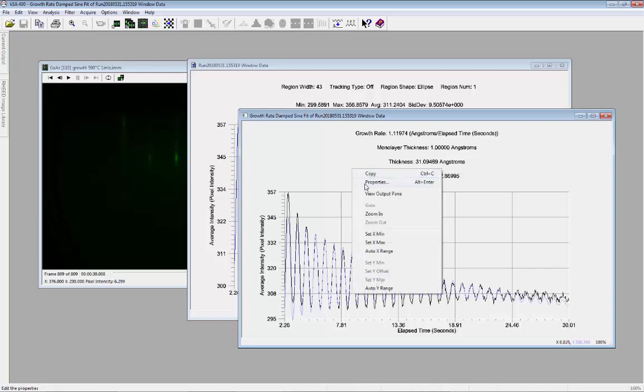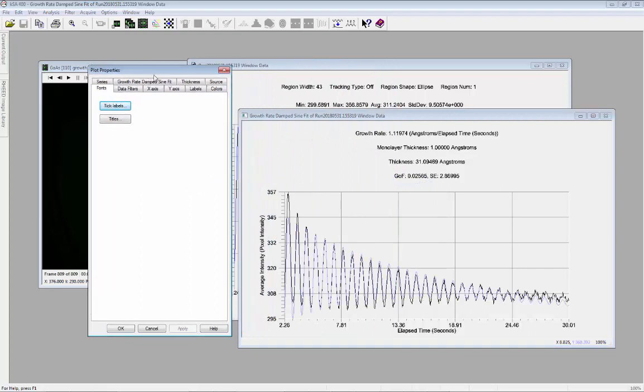Right-click and select Properties, then select the Thickness tab to specify the monolayer thickness in either angstroms or nanometers. This is required to compute the growth rate and thickness. In this case, I will enter a value of 2.86 angstroms corresponding to gallium arsenide. Note that if the monolayer thickness is set to 1, the growth rate and thickness will be expressed in monolayers, which some users may find more useful.